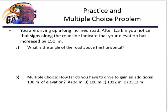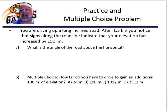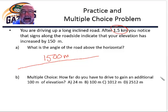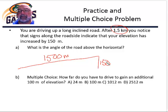Here we have a practice and multiple choice problem. We're driving up a long inclined road, and after 1.5 kilometers you notice that signs along the roadside indicate that your elevation has increased by 150 meters. What is the angle of the road above the horizontal? I'm going to draw a picture to understand it. My picture shows 1500 meters — I've converted 1.5 kilometers into meters. My elevation has increased by 150 meters. I want to know what the angle of the road above the horizontal is.